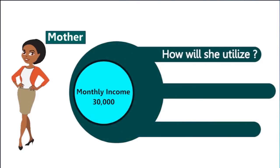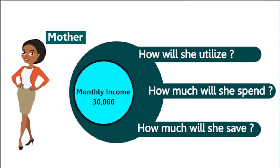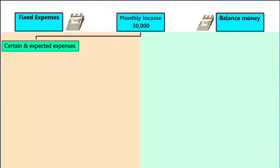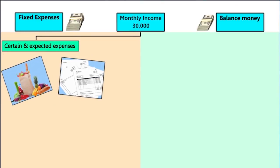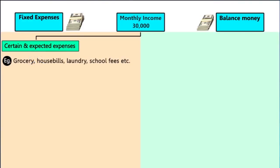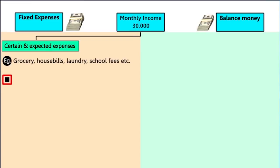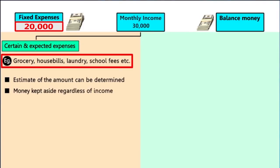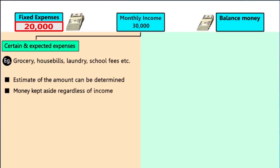Let's say the monthly income is 30,000. How will she utilize this amount — how much will she spend and how much will she save? First, she will set aside some money for all of the fixed monthly expenses like grocery, house bills, laundry, and the children's school fees. Even though the prices may vary a little, they would be in the same range, so the rough estimate of all these expenses is 20,000.